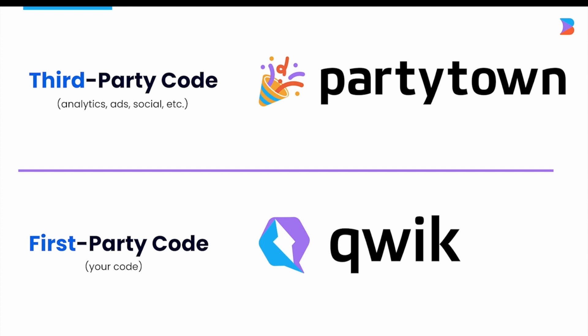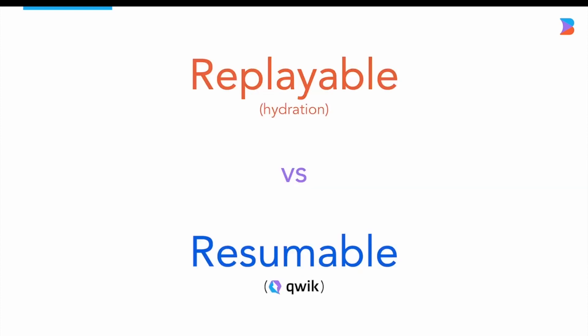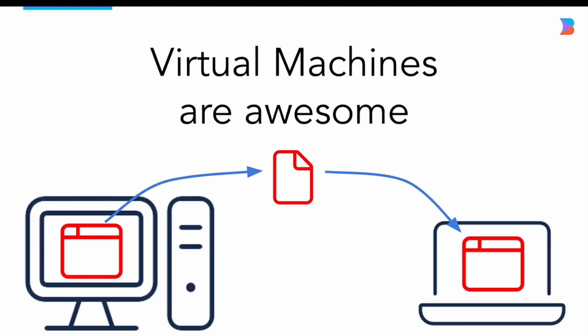There are hundreds of frameworks that say they're the fastest — how is Quick actually different? This leads us back to the mental model of today's frameworks. Many popular frameworks today use hydration to start up a server-side rendered application. The big difference is that most of today's frameworks are replayable, whereas Quick is resumable.